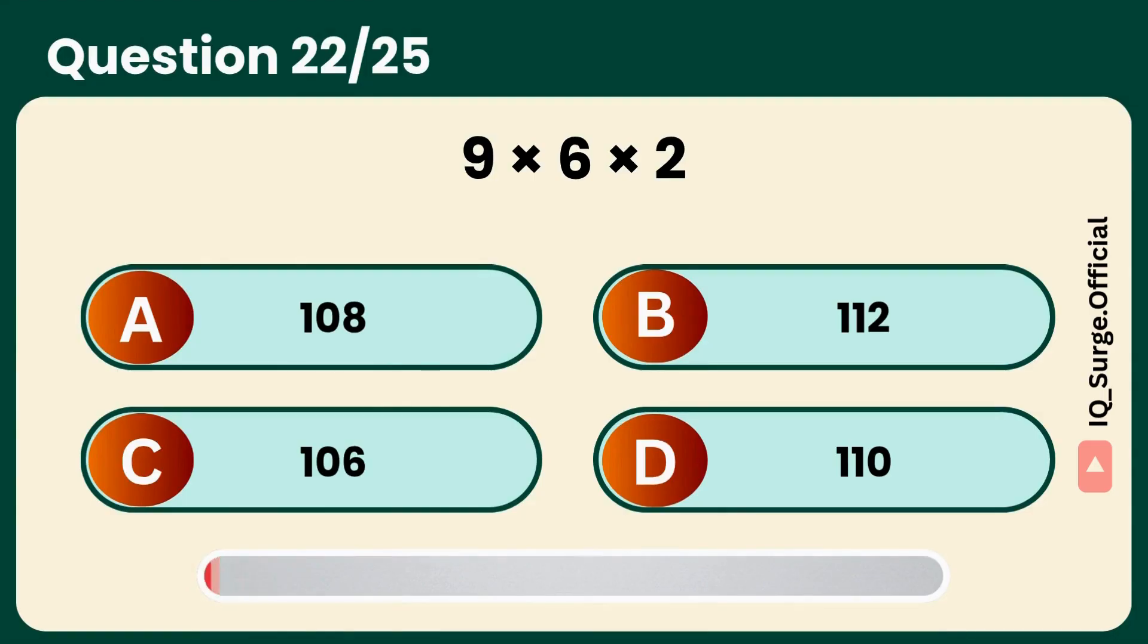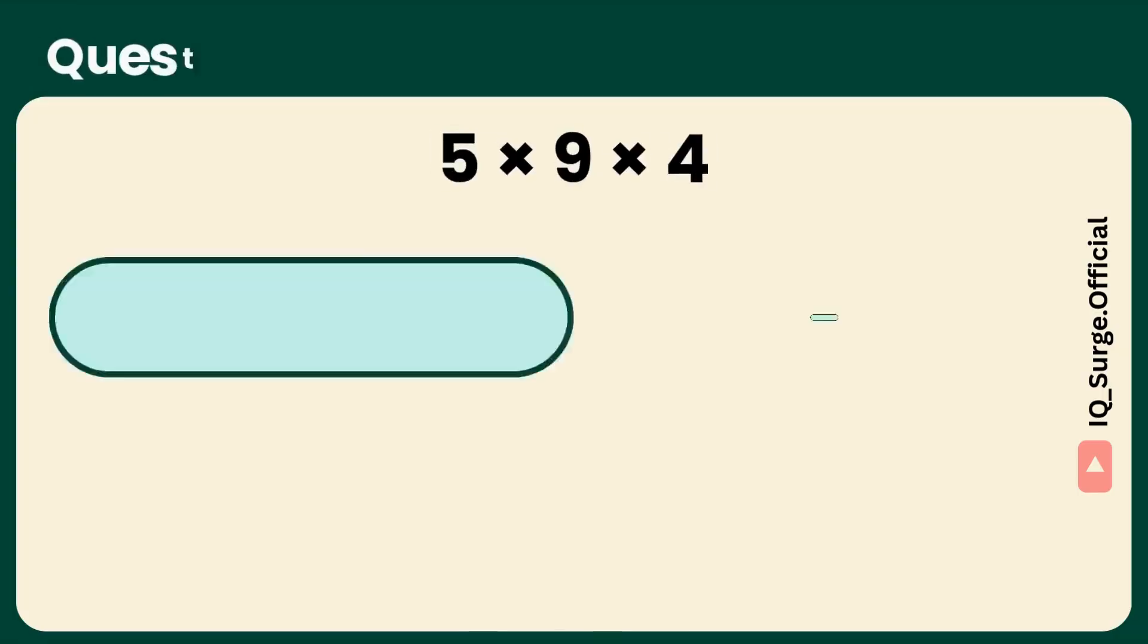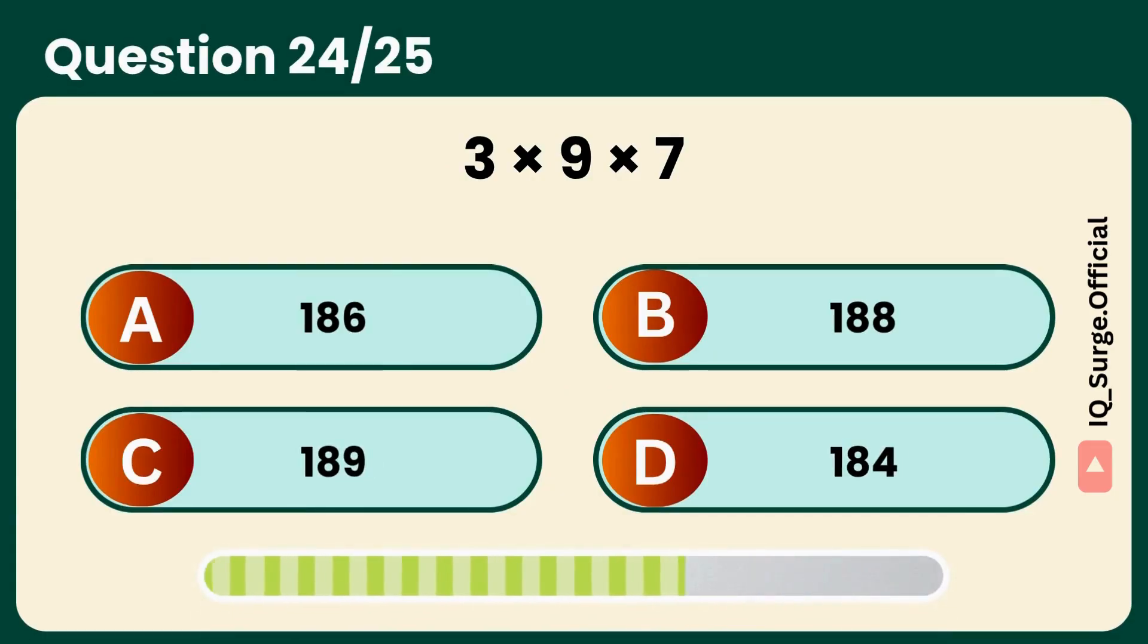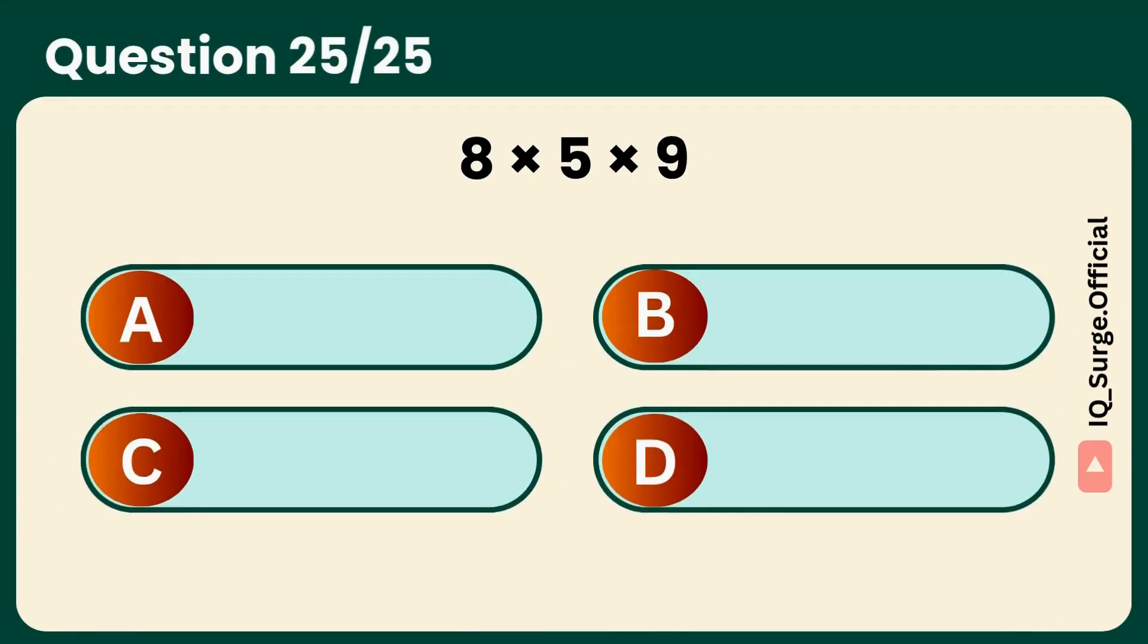Super quick solve. Answer: A, 108. What is 5 times 9 times 4? Final stretch. Answer: B, 180. What is 3 times 9 times 7? Final stretch. Answer: B, 189. What is 8 times 5 times 9? Final challenge, go. Answer: A, 360.